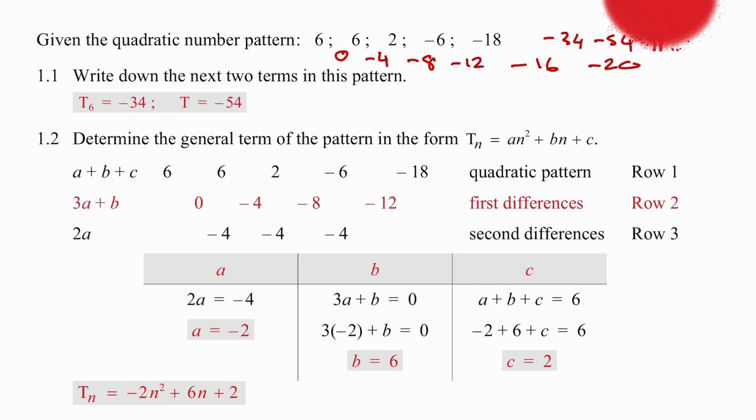Using our ABC method, we are going to generate the formula for question 1.2 by doing the following. We're going to start by recognizing that 2a is equal to minus 4. We are going to find that a is equal to minus 2. Then, we are going to take 3a plus b equal to 0, and using that information, and substituting the value of a, which we know to be minus 2, we are going to work out that the b value is 6.